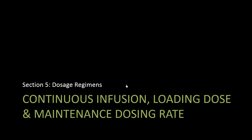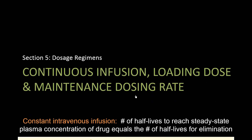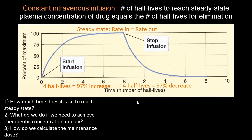What we're going to do now is talk about the last part of pharmacokinetics — chapter 3 — which is looking at dosage regimens. We'll start our discussion by looking at continuous infusions.